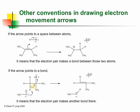In this example, an arrow moves to a bond. That means that the electron pair makes another bond there. In this case, you're making a double bond where there was once only a single bond.